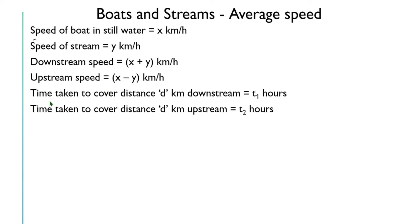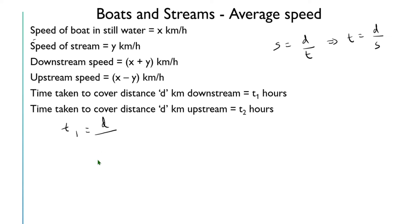Now, if the time taken to cover a distance of d kilometer downstream is t1 hours, and the time taken to cover the same distance upstream is t2 hours, then from these two we will calculate the total time and the average speed. We know that speed equals distance by time, so time equals distance by speed. Therefore, t1 equals d divided by downstream speed, which is d divided by x plus y.